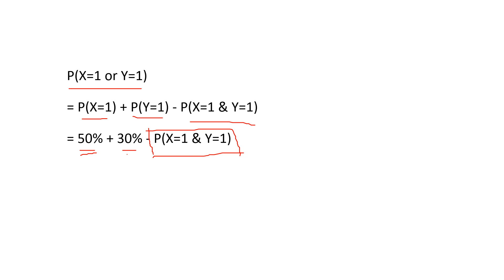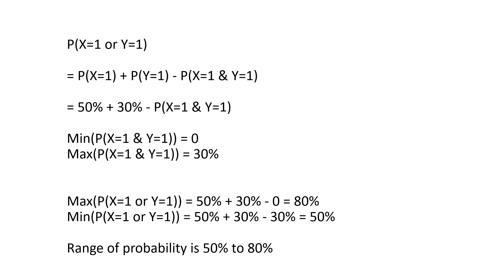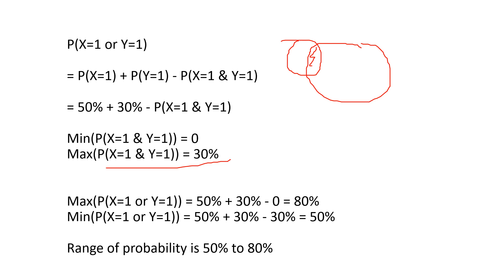To find the range of the probability that both bonds default, think of it in terms of a Venn diagram where one set is the probability bond A defaults, the other is the probability bond B defaults, and the overlapping region is the probability both default. The minimum overlap is zero when there is no overlap at all. The maximum is 30% when one set is completely inside the other.